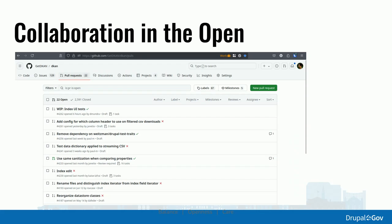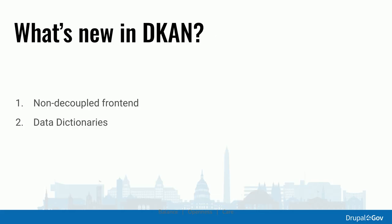DKAN has been out for a while. A non-decoupled frontend is a newer feature — we really built DKAN API-first, and sites in production were mostly React decoupled sites. We're trying to reach parity with regular Twig templates that are themeable in Drupal, because that was missing from some people's experience. On the flip side, DKAN having developed API-first means all features are readable and writable through really powerful APIs.